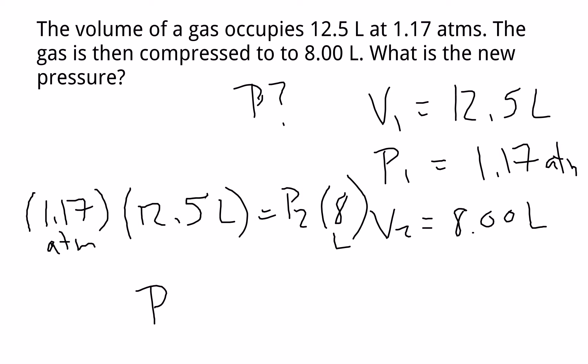I left the decimals off that, but you would put .00. So I would take 1.17 times 12.5, and then I would divide through by 8, and if you do that,